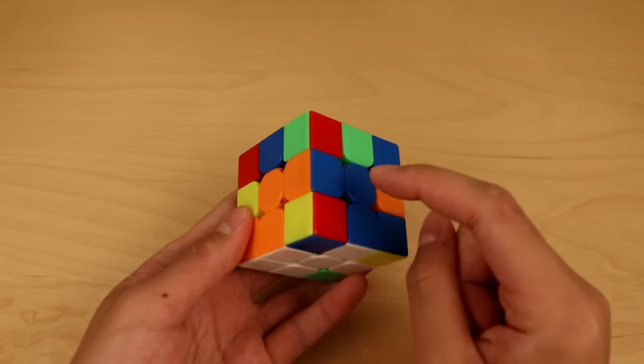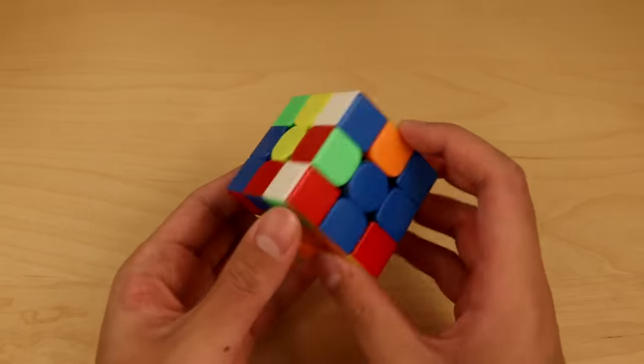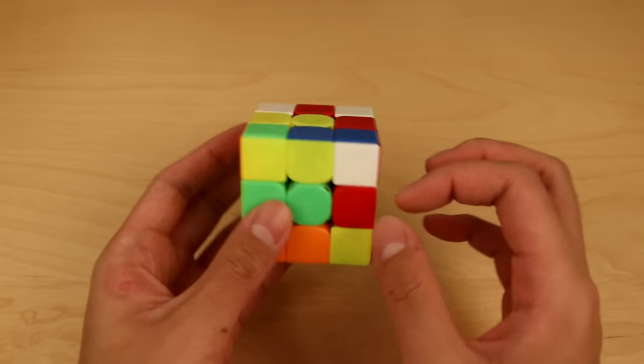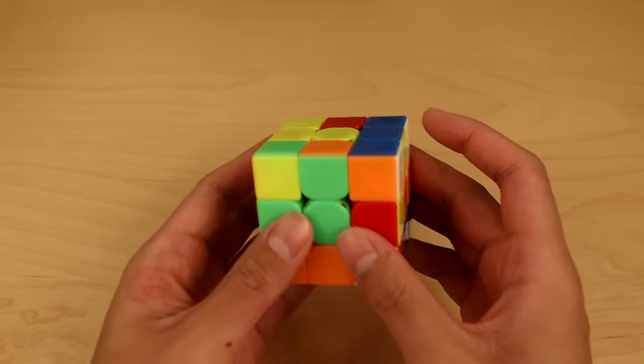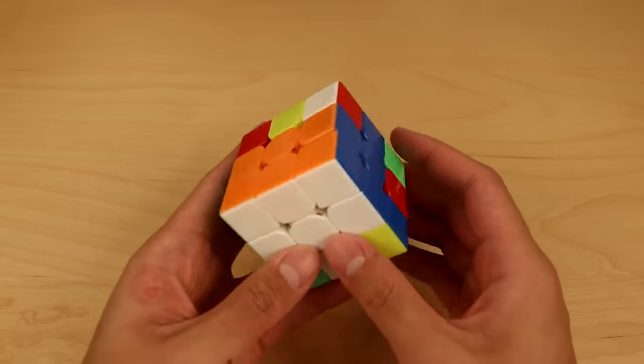And we can just solve the second F2L pair like normal if we put these slots together. For example, the corner that has to go here is white, blue, orange, which is up here. And the edge is green and orange, which is back here. So what I could do is have this slot in the front, and just solve those two pieces into here. In this case, take out this pair and insert it. You can see how it solves both F2L pairs at once.